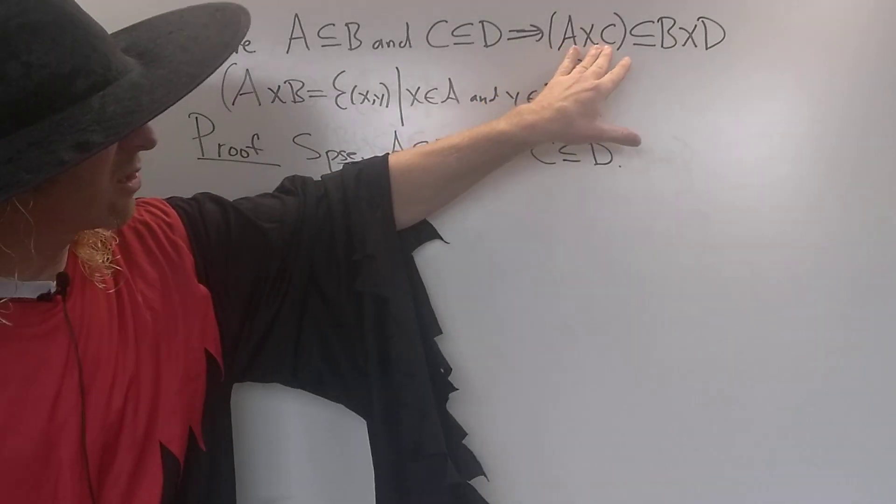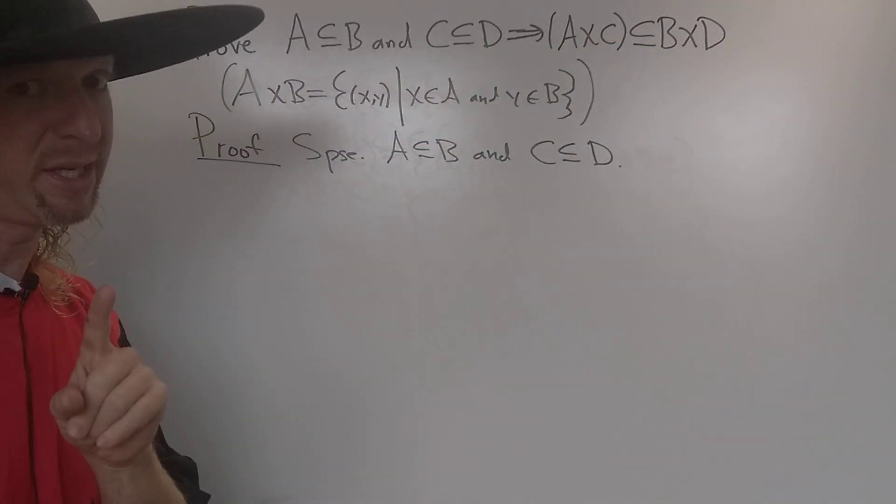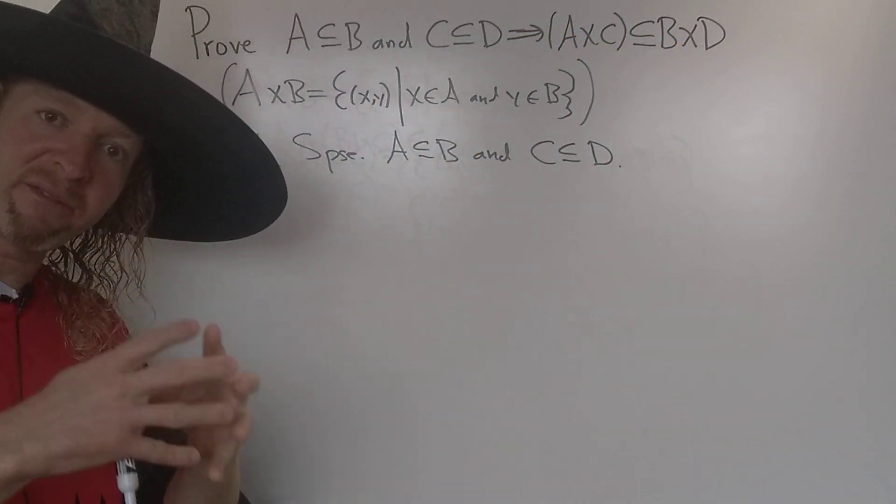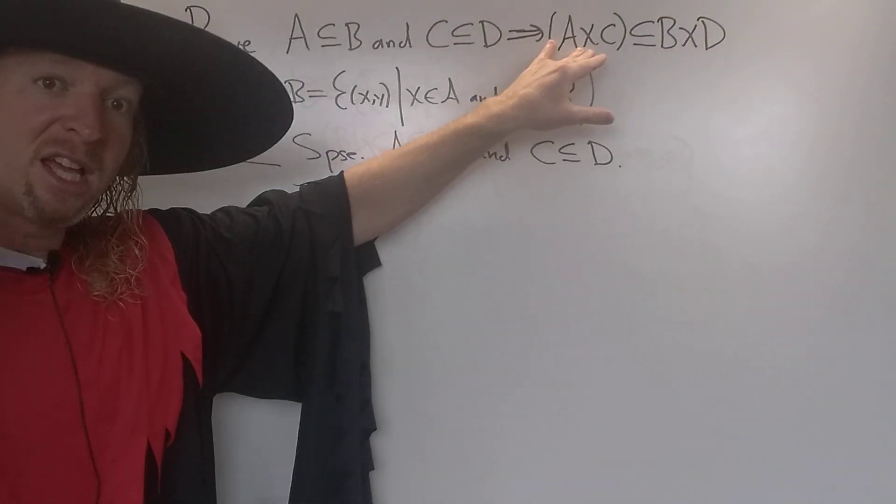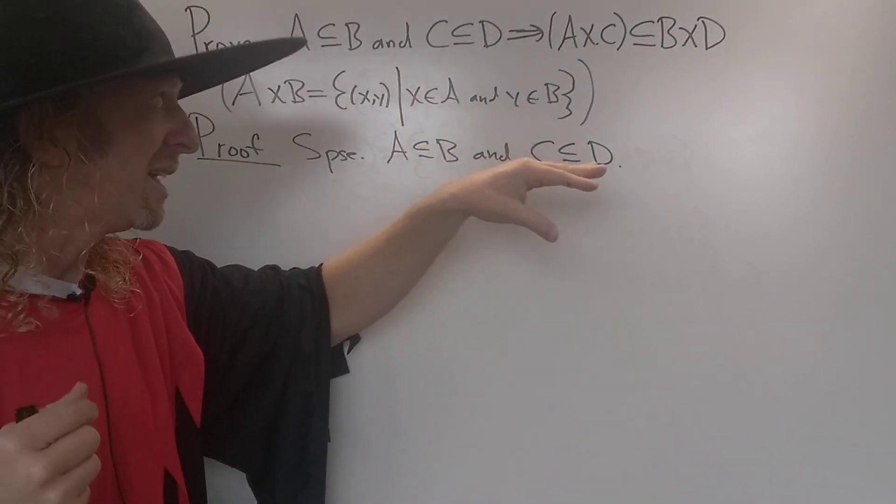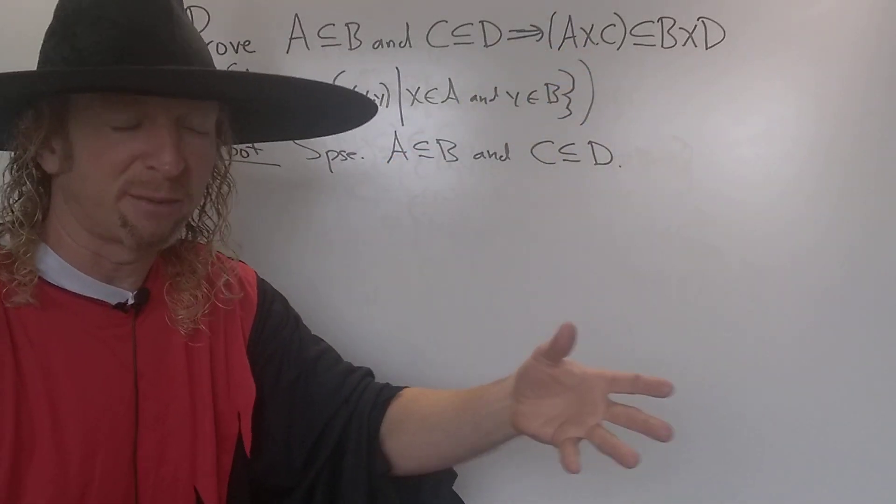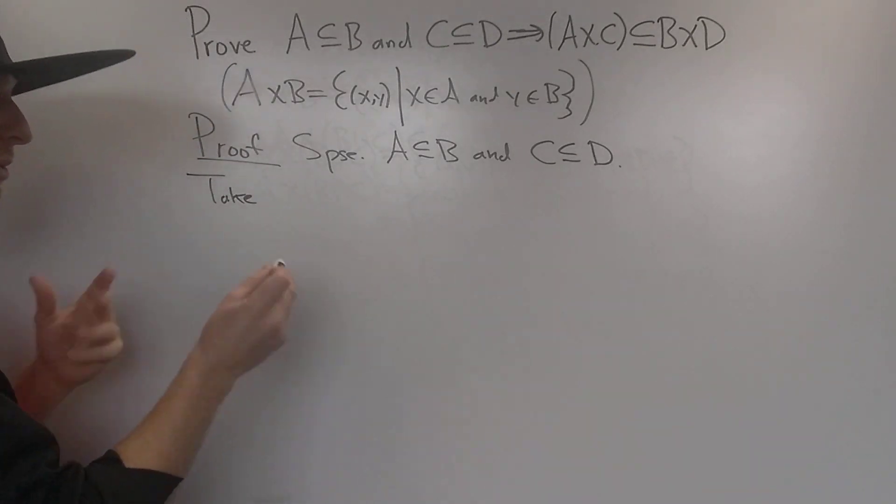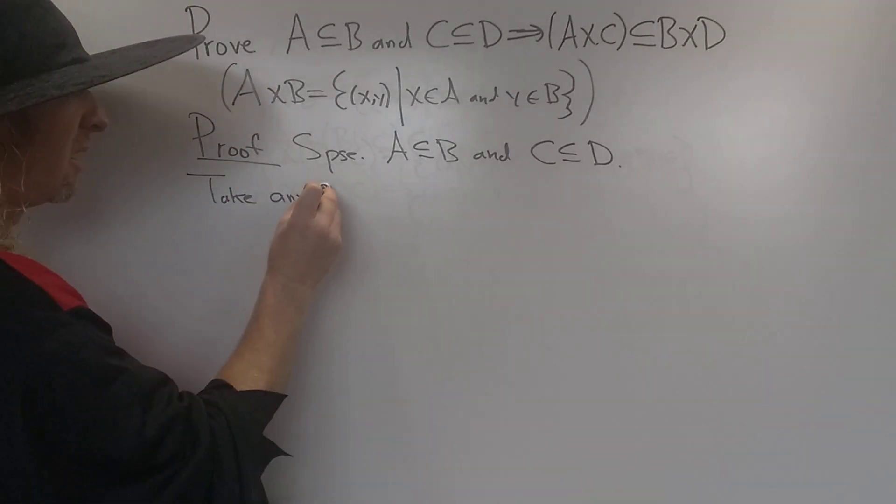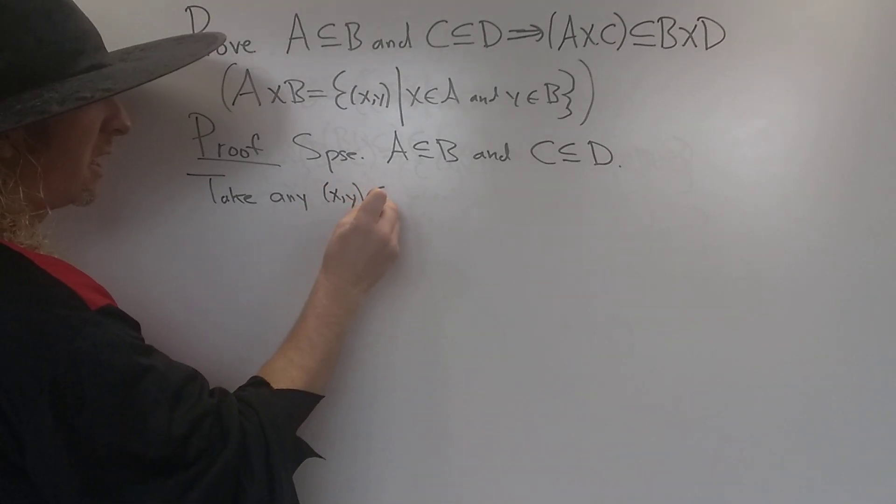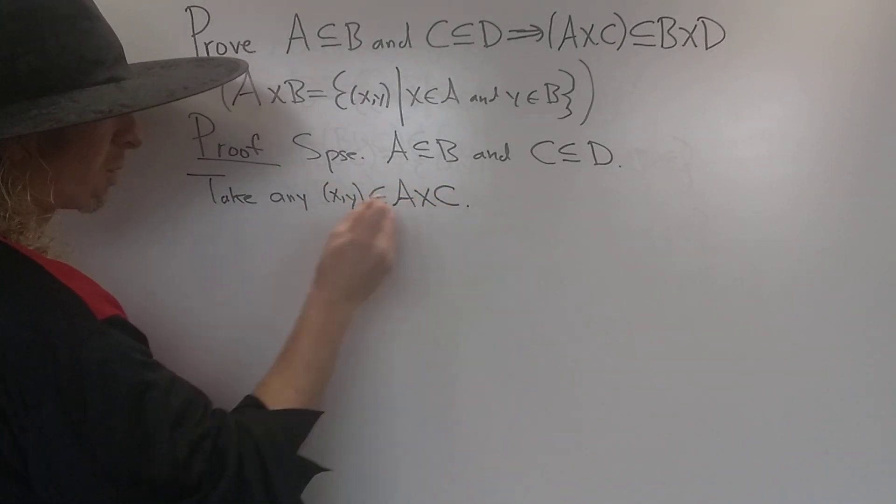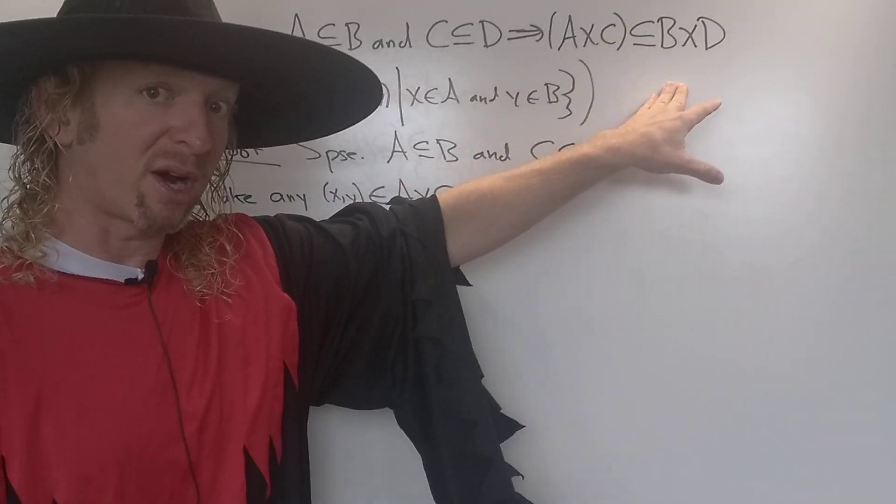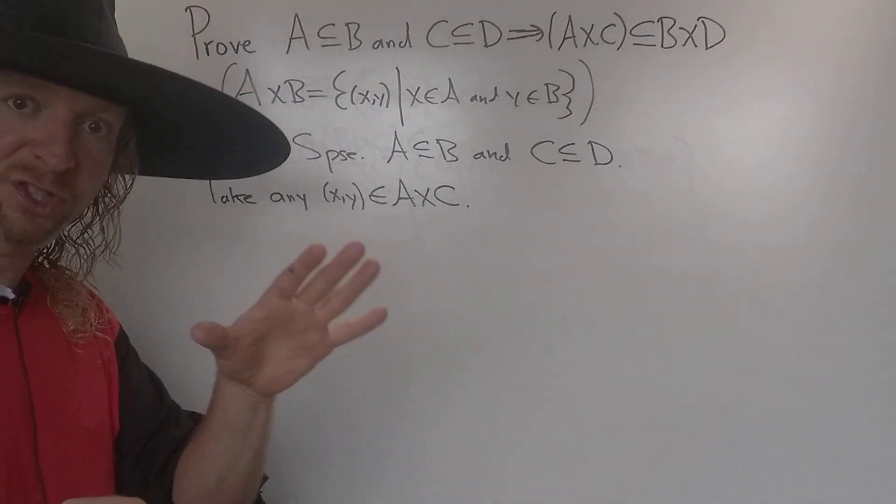Now the claim is that A cross C is a subset of B cross D. So we have to show that this set is contained in this set. In order to do that, we have to show that every element of this set is also in this set. So we start by taking an element of this set, an arbitrary element. Take any X comma Y in A cross C. Now we just have to show that this element is also in B cross D. If we do that, then the proof is done.